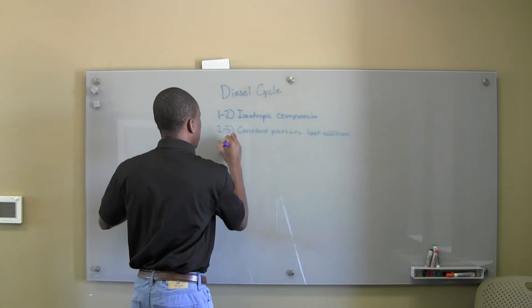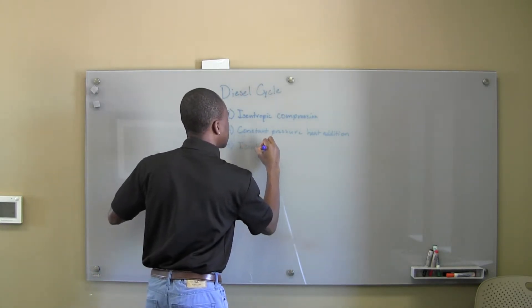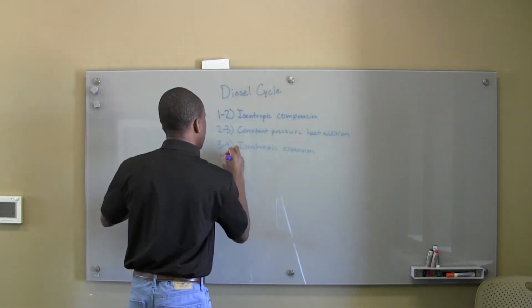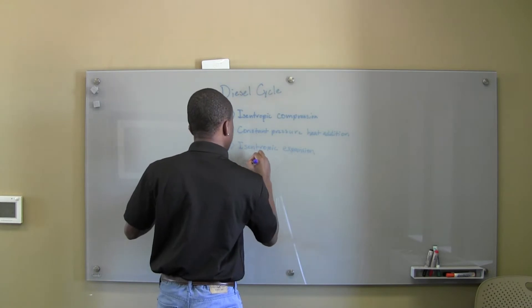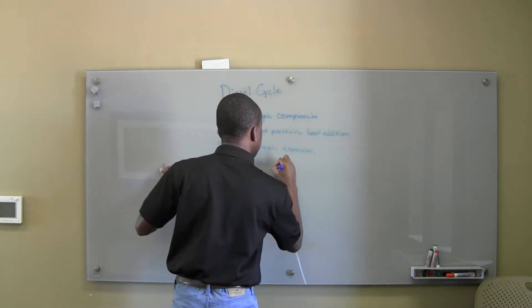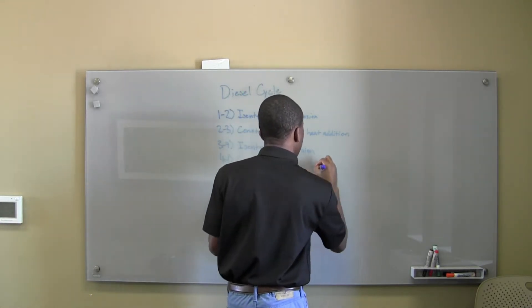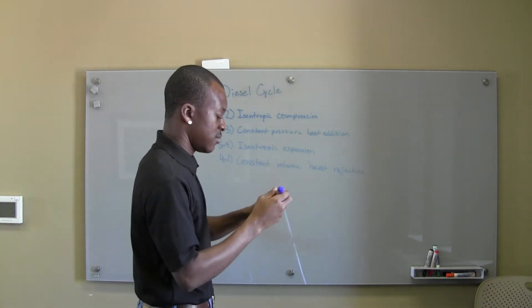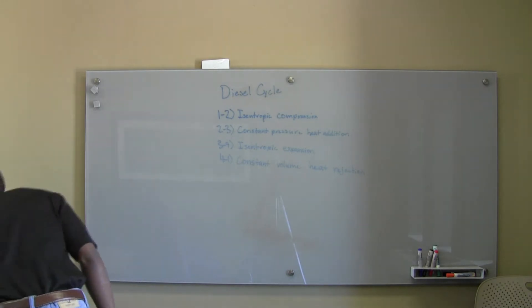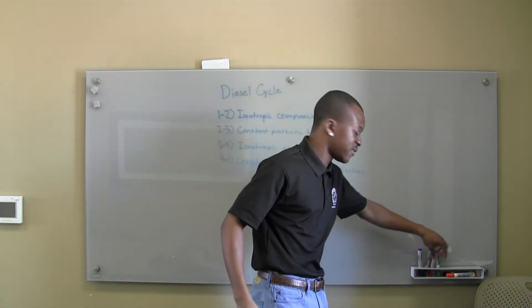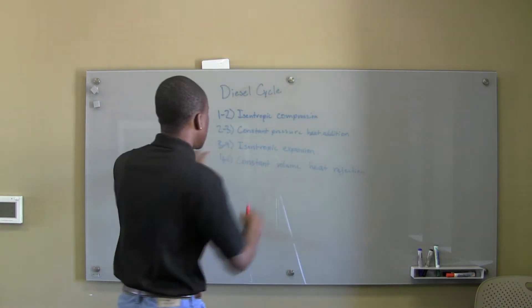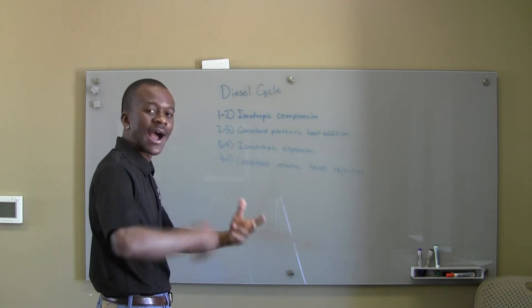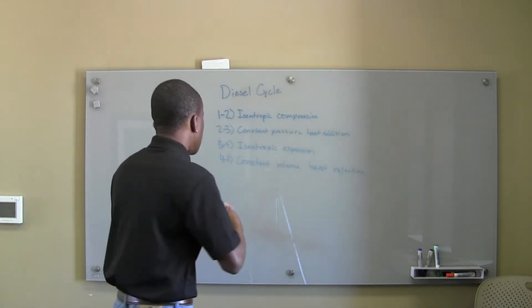From three to four, we have an isentropic expansion. And then from four to one, we have a constant volume heat rejection. The only difference here is just that constant pressure heat addition versus constant volume. You don't need to change anything else in these other three stages. Something sort of interesting goes on during this constant pressure heat addition — we have work out at the same time as we have Q in.